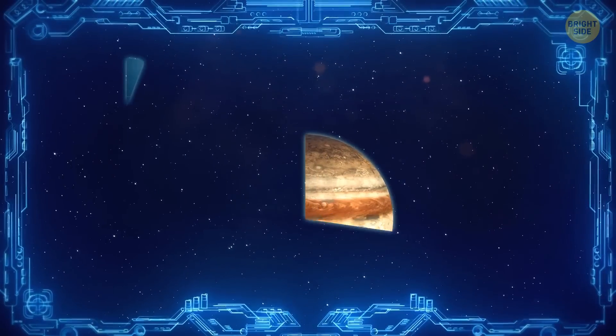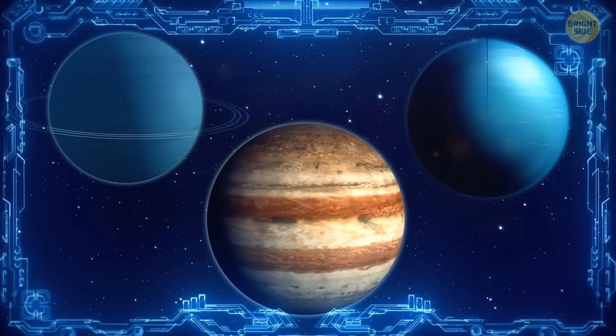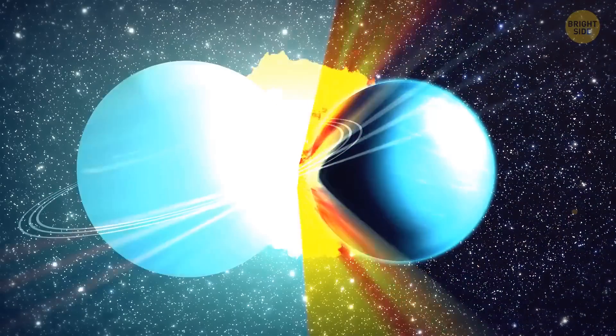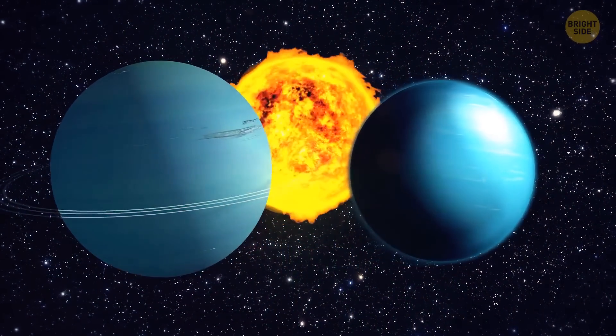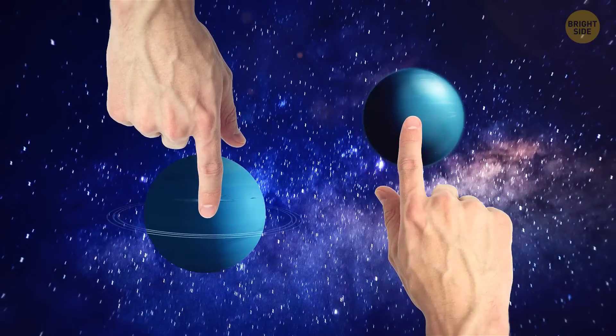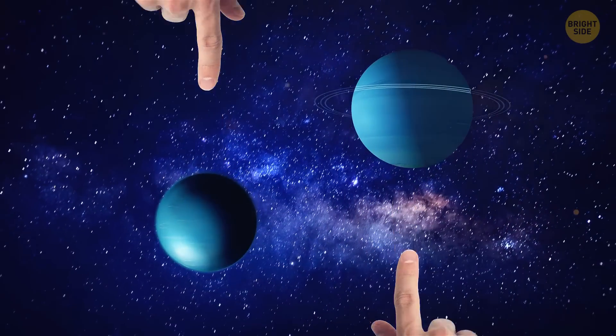Standard models said it'd take forever for them to form, way longer than the solar system itself has been around. If this new theory is correct, it suggests that Uranus and Neptune came from this dense cloud of gas, compacted around the sun. Problem is, for the theory to make sense, they had to have swapped places at some point in history.